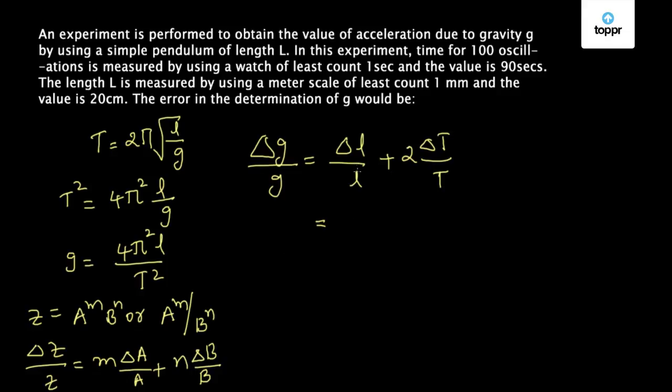Delta l is the least count of the measurement in measuring the length. That least count is 1 millimeter, that is 0.1 centimeter, divided by length which is 20 centimeters.